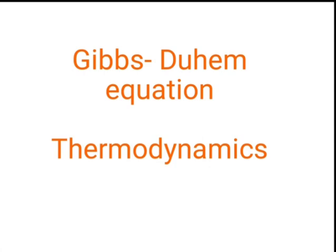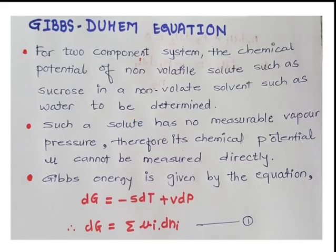We will start with the new topic: the Gibbs-Duhem equation. In this, we will see the relationship of the chemical potential with various parameters. The Gibbs-Duhem equation is useful for a two-component system.